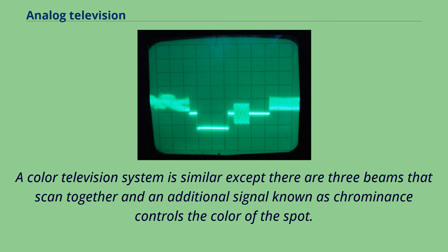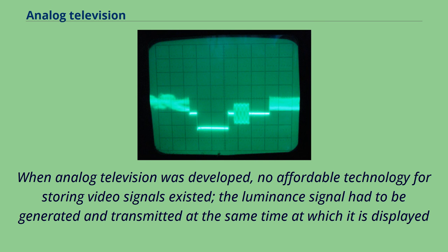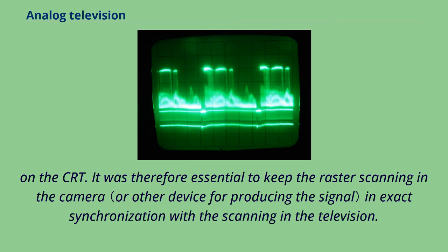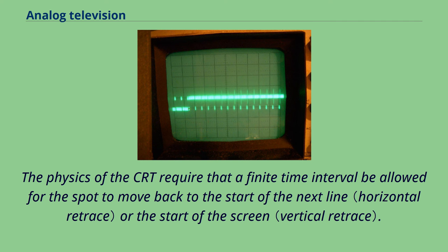When analog television was developed, no affordable technology for storing video signals existed. The luminance signal had to be generated and transmitted at the same time at which it is displayed. On the CRT, it was therefore essential to keep the raster scanning in the camera in exact synchronization with the scanning in the television. The physics of the CRT require that a finite time interval be allowed for the spot to move back to the start of the next line or the start of the screen.